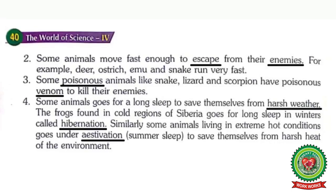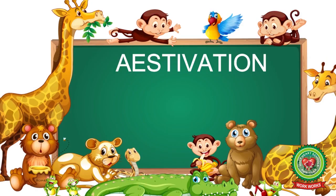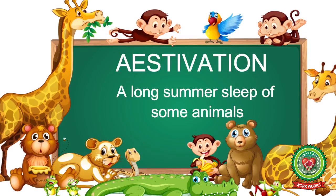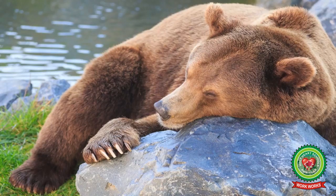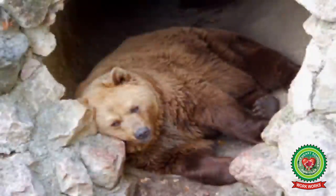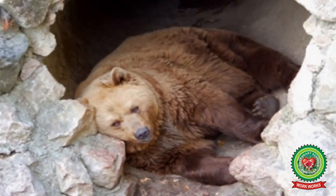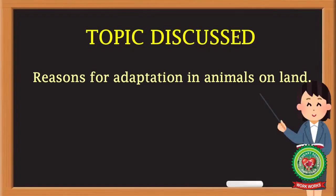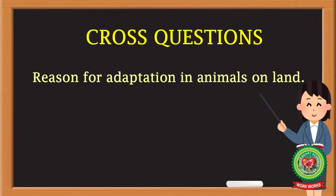Similarly, some animals living in extreme hot conditions go under estivation — summer sleep — to save themselves from the harsh heat of the environment. Underline 'estivation' and write down its meaning: a long summer sleep of some animals. When the outside temperature is very hot, these animals undergo summer sleep to protect themselves from the hot outer environment. So in today's class I have discussed with you reasons for adaptation in animals on land. Read and revise the topic thoroughly and also revise the cross questions. Thank you.